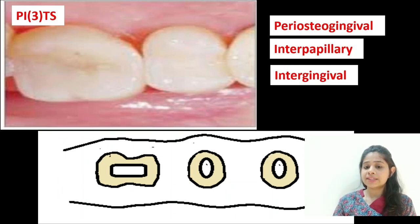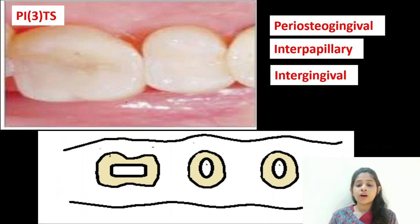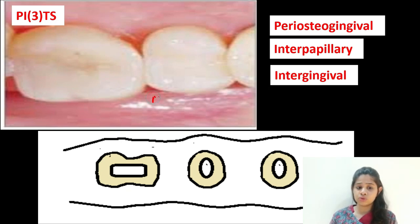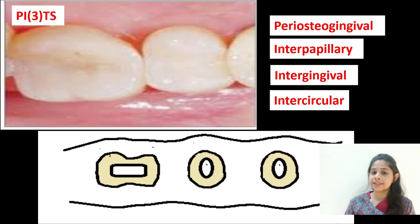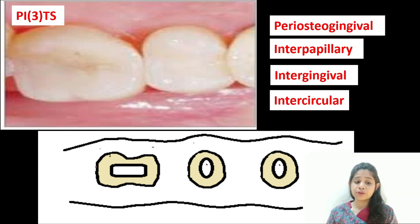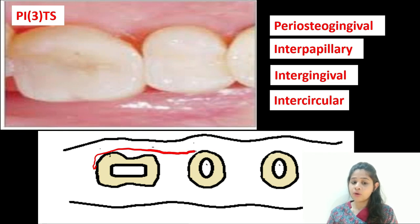The next group is the intergingival group, which is seen in the attached gingiva and extends in a mesiodistal fashion. Then we have the intercircular group: these fibers arise from the cementum on the distal aspect of the tooth, splay in a buccolingual direction around the next tooth, and get inserted into the mesial aspect.